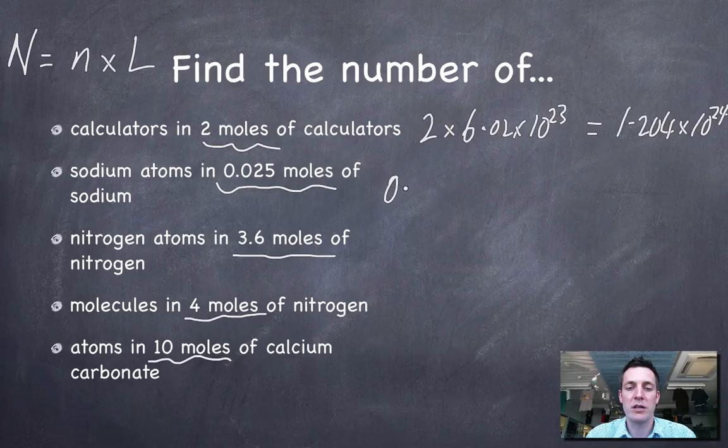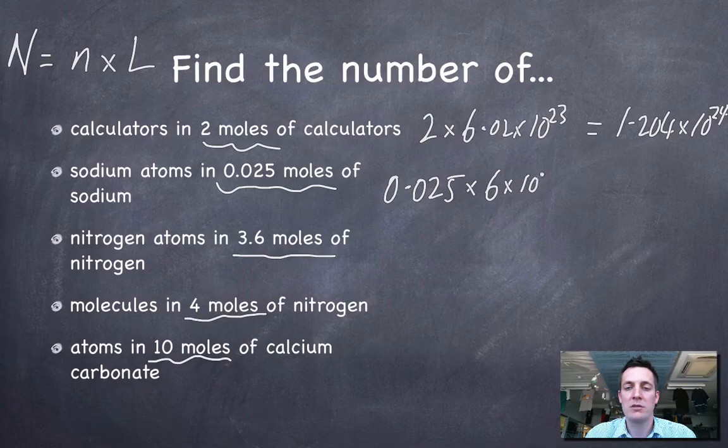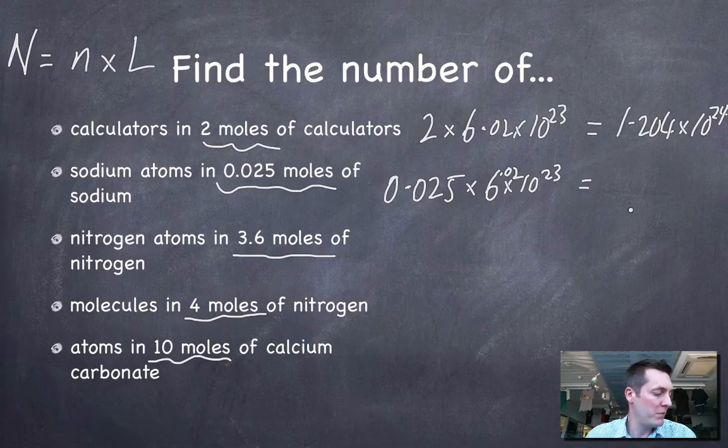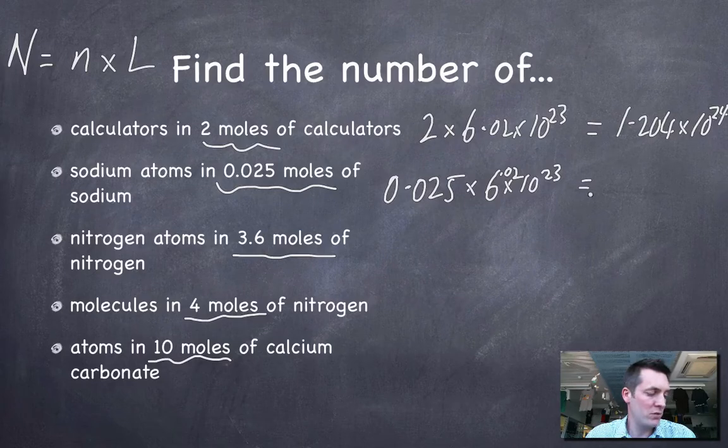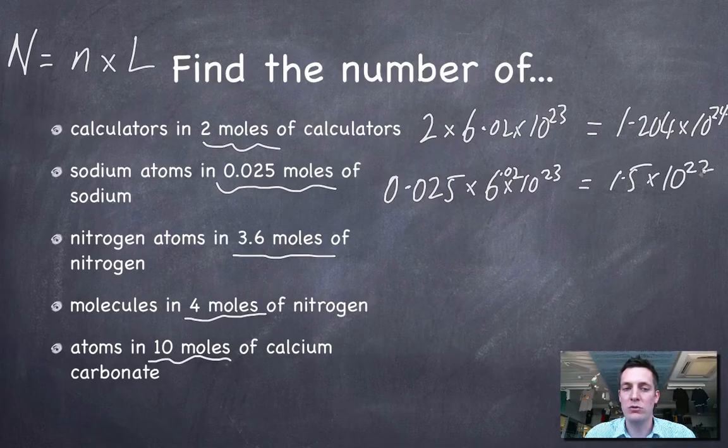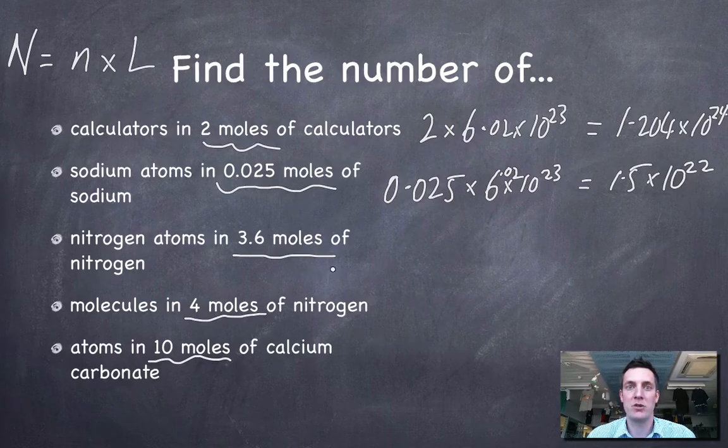In fact, I'd be tempted to do this one on my calculator. But again, I've got the number of moles, which is 0.025, and multiply it by 6.02 times 10 to the 23. And what would that be? That would be 1.5 times 10 to the 22 sodium atoms. Large number of sodium atoms.